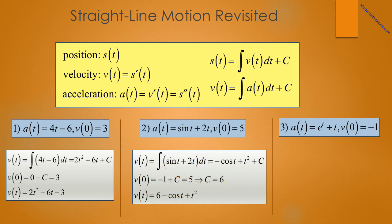In number two, you're given that a of t equals sine of t plus 2t, and v of 0 is equal to 5. So v of t is equal to the integral of sine t plus 2t dt, which is equal to negative cosine t plus t squared. Plugging in zero, we get v of 0 equals negative one plus c equals 5, making c equal to 6. Therefore, v of t is equal to 6 minus cosine t plus t squared.